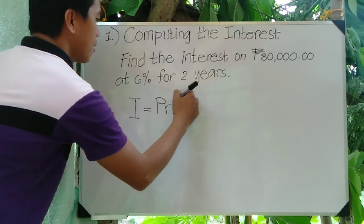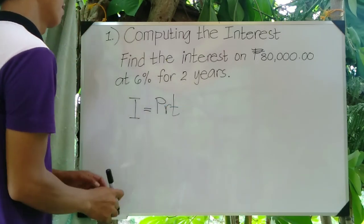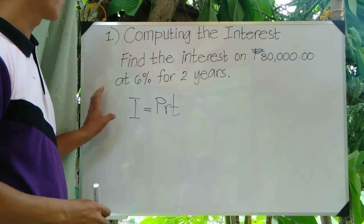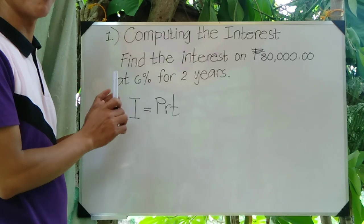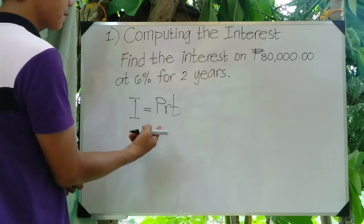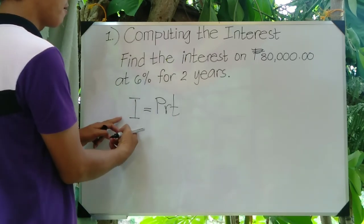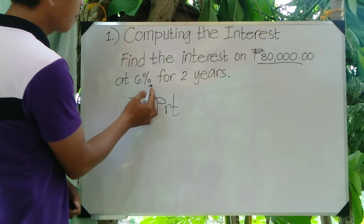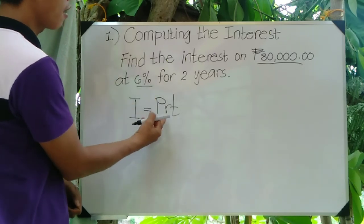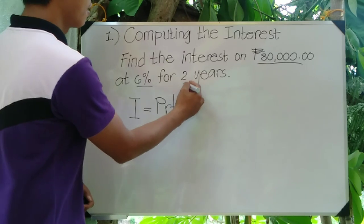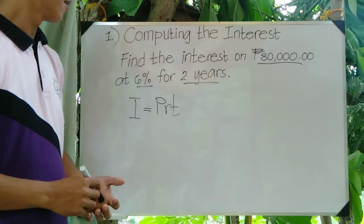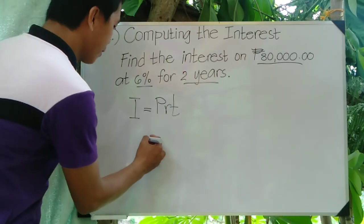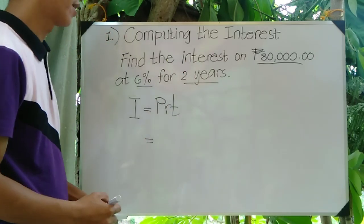In solving this problem, we have to identify first the given in the problem — what was given and what we are looking for. The given are: 80,000 pesos for our principal amount, 6% which refers to R, and two years which refers to the time. What we are looking for is the interest.